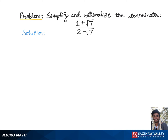To rationalize the denominator of (1 + √7) / (2 - √7), we need to multiply the top and bottom of the fraction by the conjugate of the denominator. The conjugate of the denominator means we keep the two terms 2 and √7 as they are, but the minus sign between them gets switched to a plus sign.